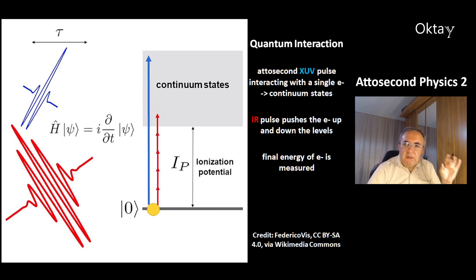This is a picture of the quantum interaction. That's the second same UV parts interacting with a single electron. It is lifted into a continuum of states. Then the infrared pulses push the electron up and down the levels until it reaches its finite energy level. And this is then measured.